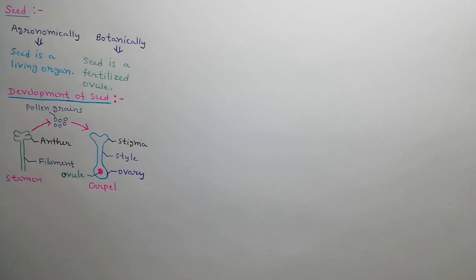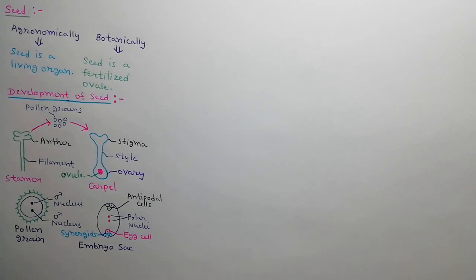At the maturity of flower, pollen grains are released by dehiscence of anthers and transferred to the receptive stigma. Each pollen grain contains two male nuclei. Each male nucleus is haploid in nature. Embryo sac is found inside the ovule. It contains three haploid antipodal cells, two haploid polar nuclei, one haploid egg cell, and two haploid synergids.